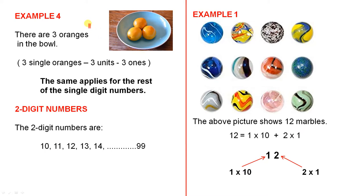We go to the next example. There are three oranges in the bowl. Three single oranges equals three units or three ones. There is a one, there is a one, and there is a one. That's a unit, that's a unit, that's a unit. There are three of them. That's the meaning of three. The same applies for the rest of the single digit numbers.